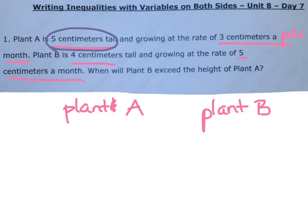That's the starting height. So that's the height that it's going to be and it doesn't change. But then its growth is growing at a rate of three centimeters a month or per month each month. Each month it's growing three centimeters.